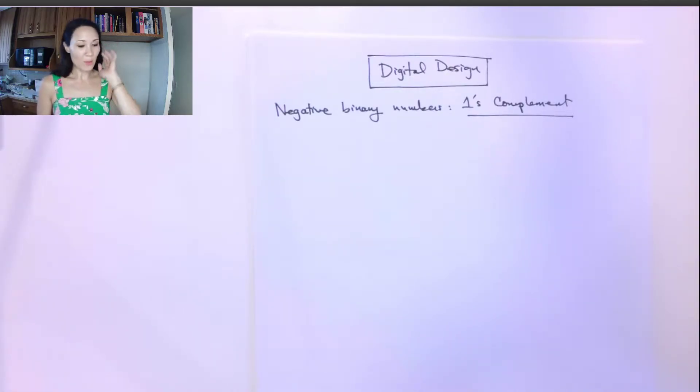The second convention for representing negative numbers in binary that we're going to talk about in this class is referred to as one's complement. The concept is really simple. We just invert all the bits, and that's how we negate the number.